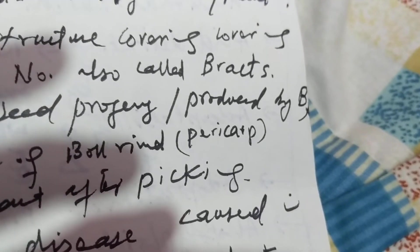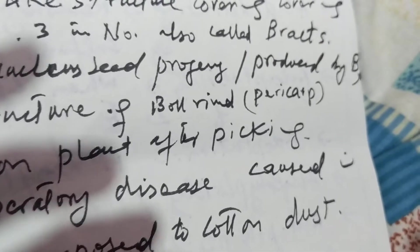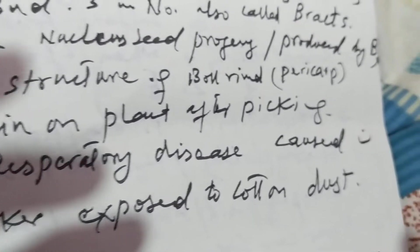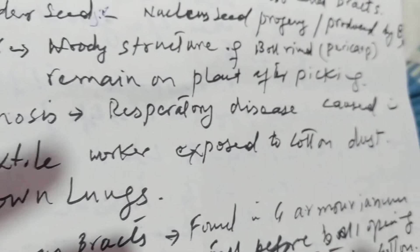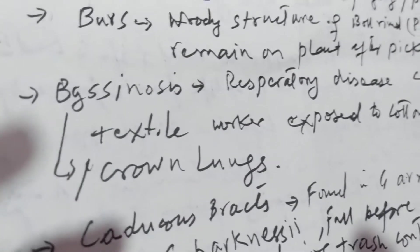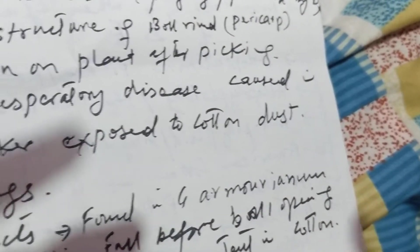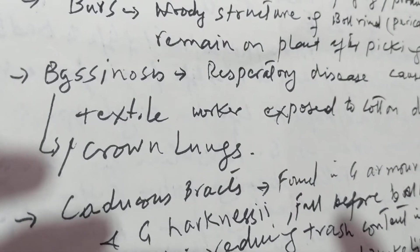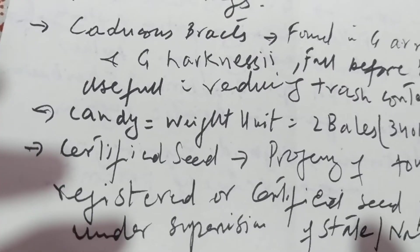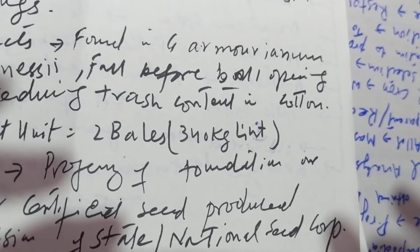Bractole is a leaf-like structure near the boll. Breeder seed refers to the initial seed stock. Burs are the woody structure of boll rind or pericarp that remain on the plant after picking. Byssinosis is a respiratory disease caused in textile workers exposed to cotton dust, also called brown lungs.